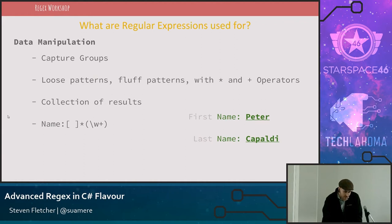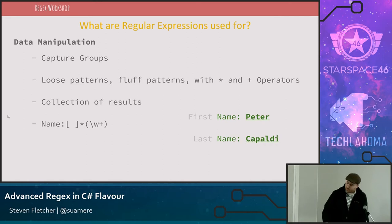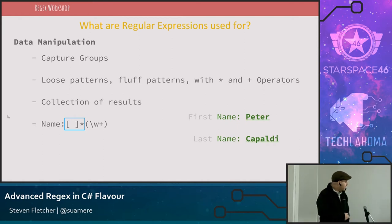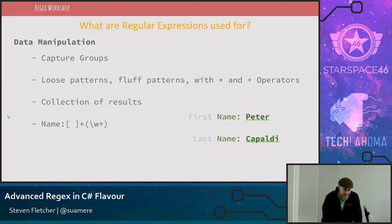The other side of the regex coin is data manipulation or data parsing. Data manipulation makes strong use of capture groups and other types of parenthetical groups. It has a much looser pattern with fluff patterns and repetition operators. In this case, that space with an asterisk is a fluff pattern — those are thrown around inside the regular expression in case somebody puts one or more spaces where maybe it shouldn't be.